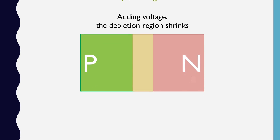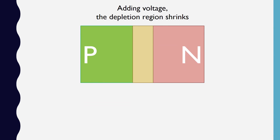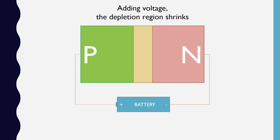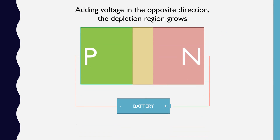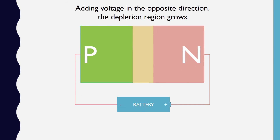If we take this diode and add some voltage, say with a battery, the depletion region shrinks and current is able to flow from the p-side to the n-side. If we take the battery and reverse the direction of its positive and negative sides, the diode actually prevents current from flowing between the n-side and the p-side, and actually makes the depletion region larger.